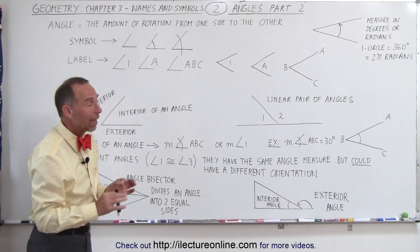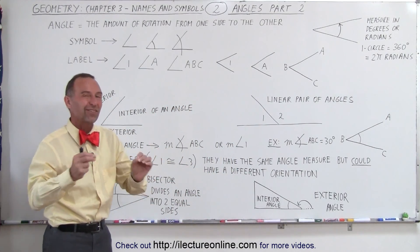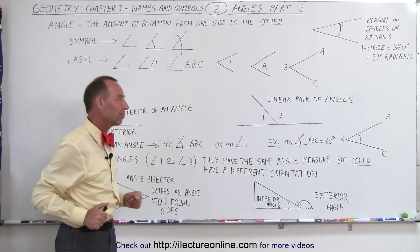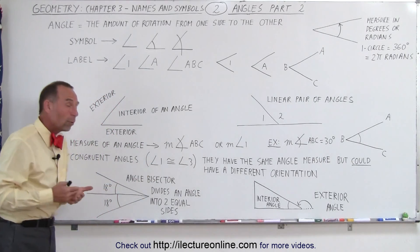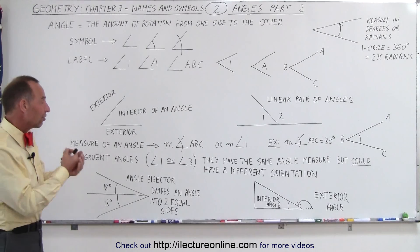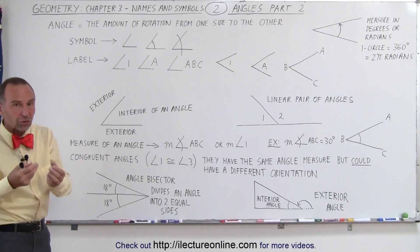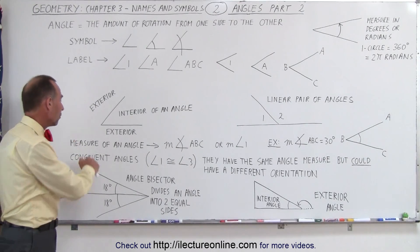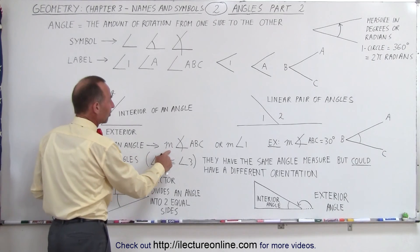In geometry, sometimes we have different names to express the same concept. Here's one example of that. Also, we need to be able to measure angles and have a symbol to indicate that we've measured the size of the angle. The measure of an angle can be expressed with a small m in front, then the angle symbol, and then the indication of which angle we're talking about.